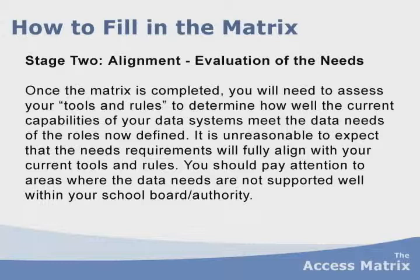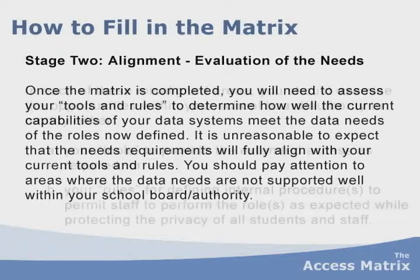Stage two is the alignment and evaluation of needs. Once the matrix is completed, you assess your tools and rules to determine how well current capabilities of your data systems meet the data needs of the defined roles. It is unreasonable to expect the needs requirements will fully align with your current tools and rules. In misaligned areas, examine opportunities to modify either your tools or your rules. Start with your people, work through the process, and then at the end examine your tools and rules — not the other way around.